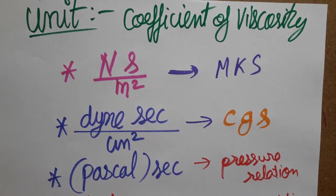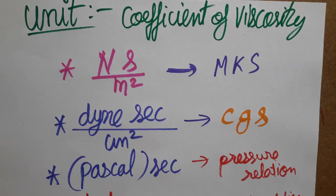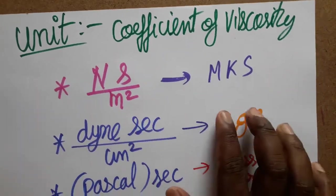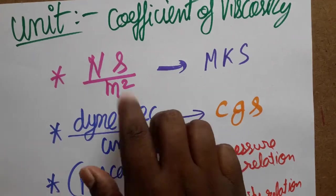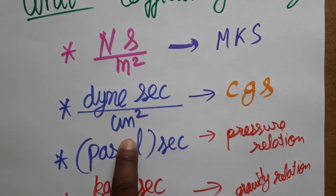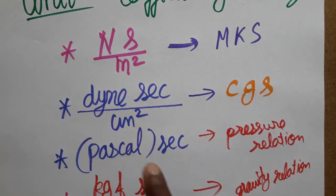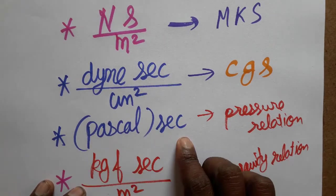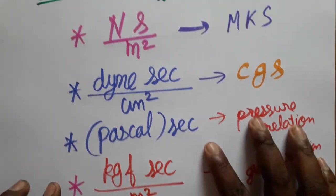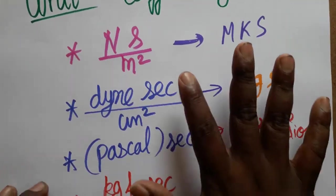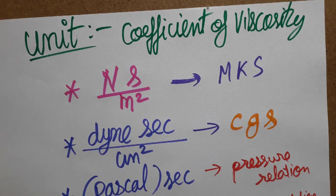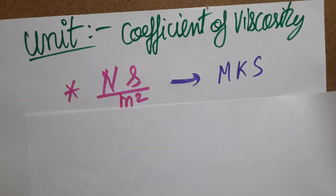Today we are going to see the coefficient of viscosity unit in different forms. The four units are: Newton·second per meter square in MKS system, dyne·second per centimeter square in CGS system, Pascal into second in pressure relation, and kgf·second per meter square in gravity relation. We are going to discuss how the coefficient of viscosity appears in each of these different forms.